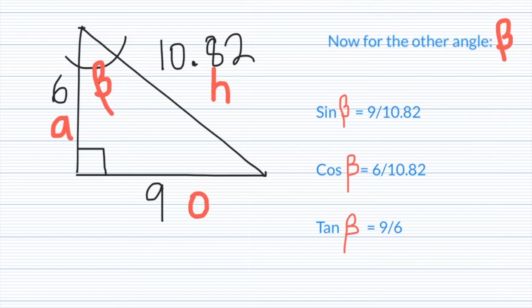Now, if we look at the other angle, which I'm going to call beta, which is on the top left-hand corner, the sine of beta is 9 divided by 10.82. The cosine of beta is 6 divided by 10.82, and the tangent of beta is 9 divided by 6.